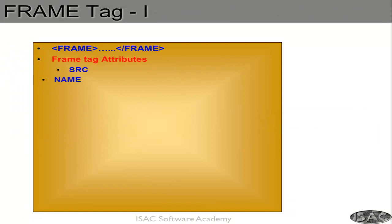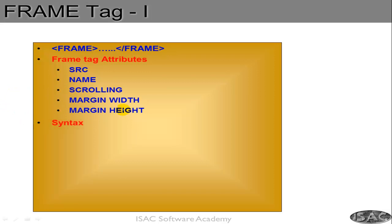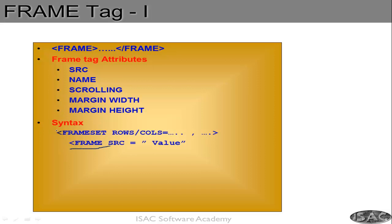Once you define the frameset, inside it you have to declare frame elements. The frame tag has attributes called source, name, scrolling, margin width, and margin height. The frame source specifies from where the content will be loaded — that is what frame source does. If you want to give a name to that frame, you can assign a name as well.